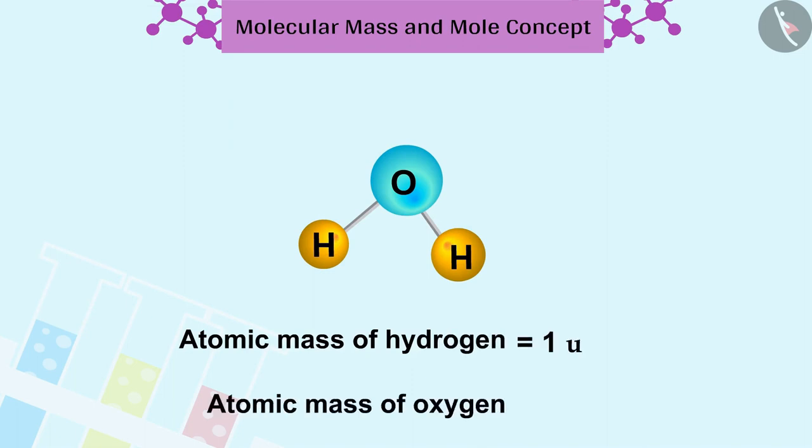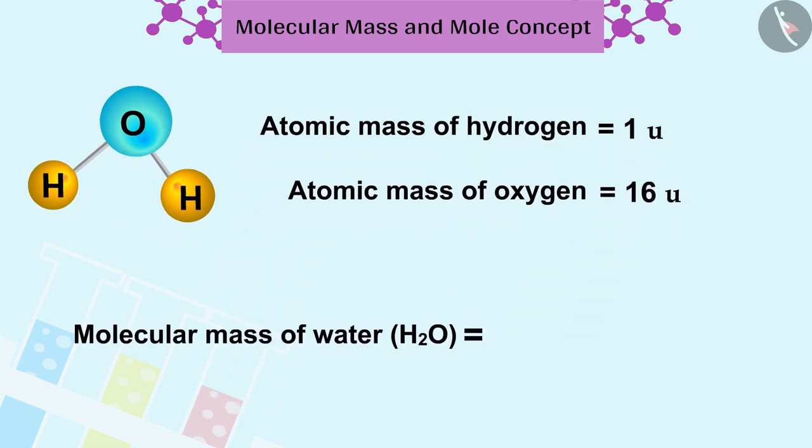So water which consists of two hydrogen atoms and one oxygen atom will have a molecular mass equal to sum of 2 into 1 and 1 into 16, that is 18u.